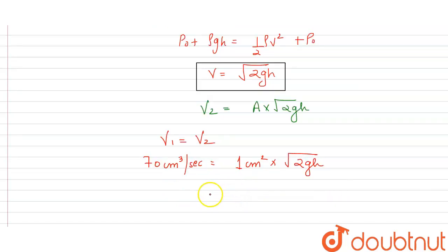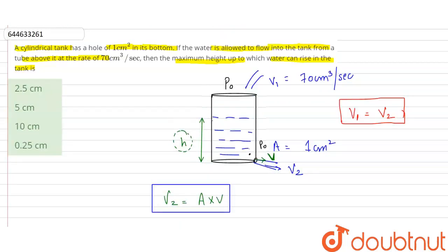From here, our height comes out to be approximately 2.5 centimeter. This is the value of our constant height in the tank. So our correct option is option A, 2.5 centimeter. Thank you.